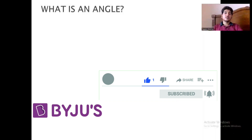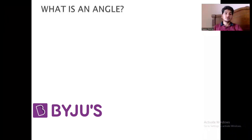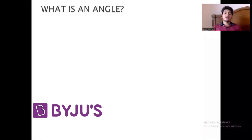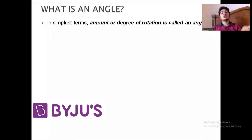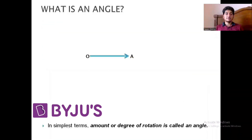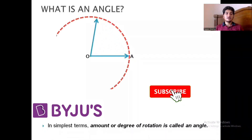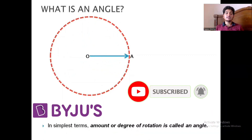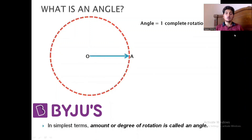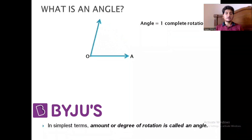Moving ahead, let us understand the meaning of the word angle. I have noticed in my teaching career that this concept of angle is very confusing to students — many students don't get the idea of what angle represents. The most precise and brief definition is: angle is nothing but the amount or degree of rotation. For example, take ray OA where O is the fixed point — if we rotate this ray so that it completes one full rotation, then the angle is one complete rotation.